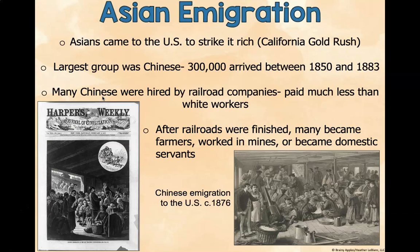Asians came to the United States to strike it rich. The largest group was Chinese — about 300,000 arrived between 1850 and 1883. Many Chinese were hired by railroad companies and were paid much less than white workers. After the railroads were finished, many became farmers, worked in mines, or became domestic servants. This is from Harper's Weekly, showing Chinese immigration to the U.S. in 1876.